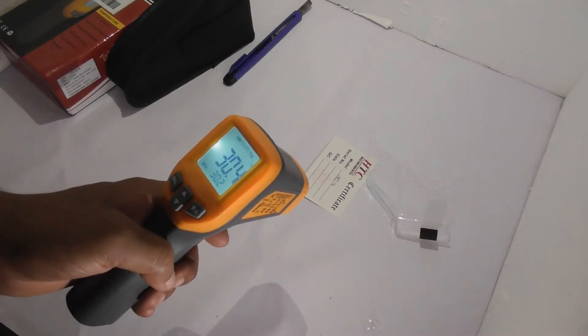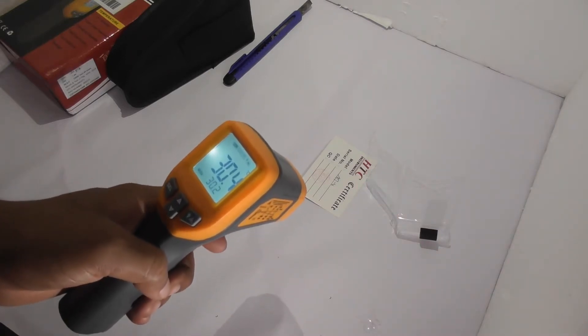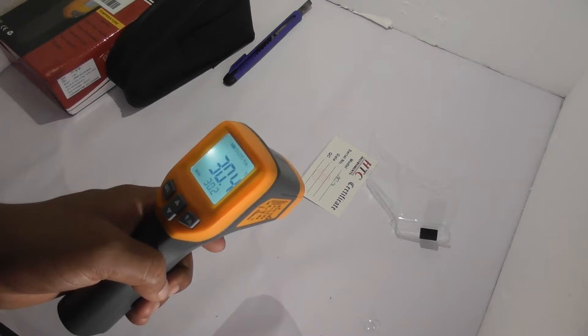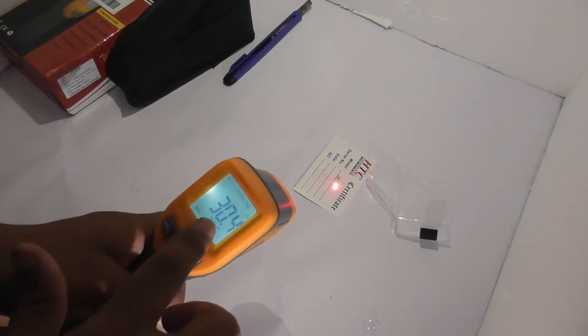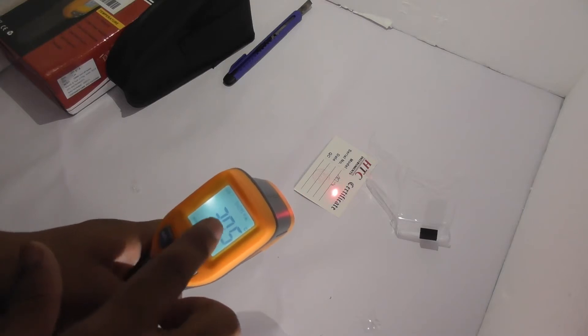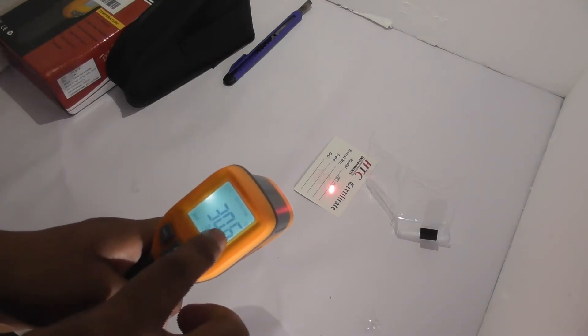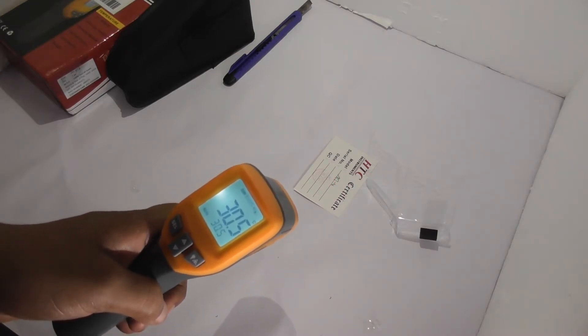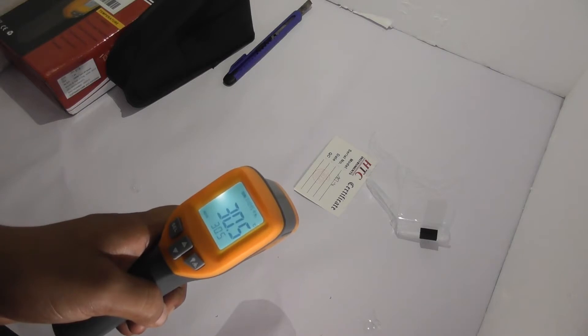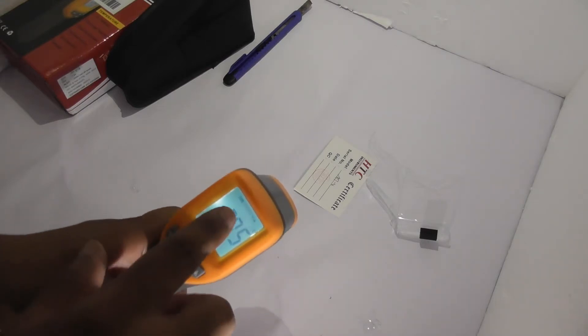Step three: the surface temperature being tested will be displayed on the LCD screen. As you can see, this is the surface temperature being displayed. Release the trigger and the hold icon will appear, and the reading will be held for several seconds.